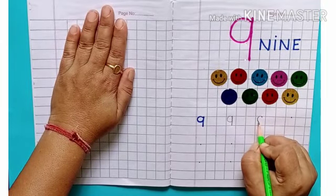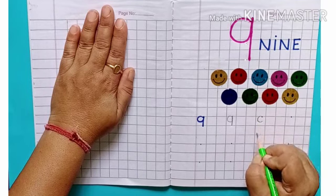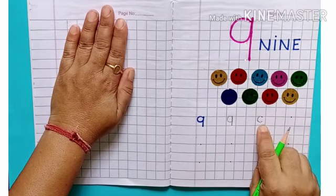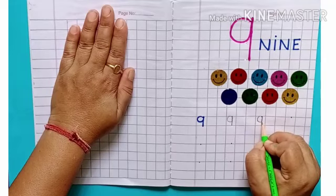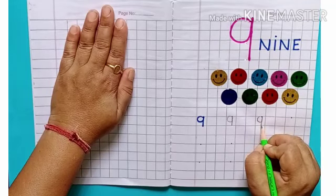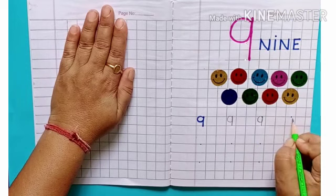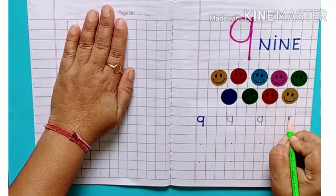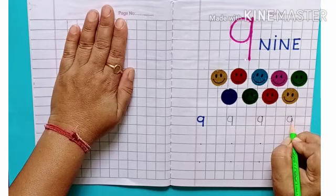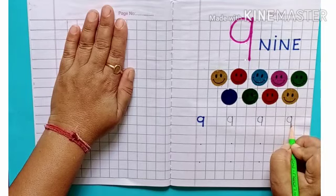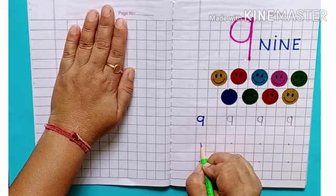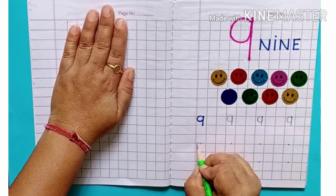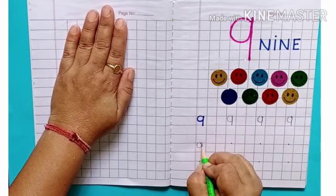Make C like this. Now go up, touch the line, make standing line and touch the bottom line of the square. Well done! Make C, go up, come down. This is nine. Again, kids, you know how to make C.